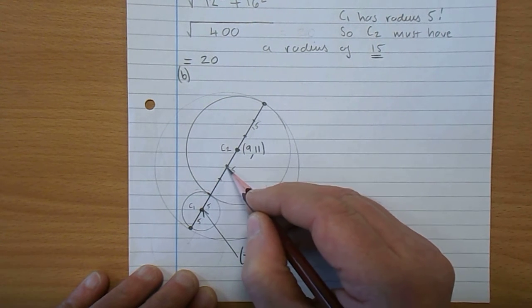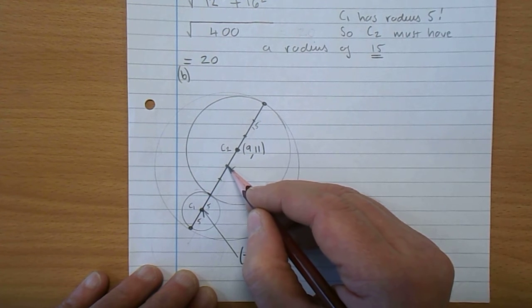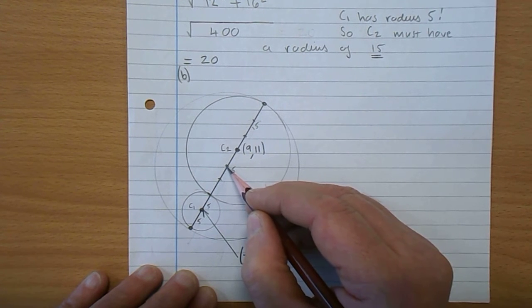Jumps of 5. So the centre of C3 is 1, 2, 3, 4. It's the fourth bit in. So that's it there. We want to know what that coordinate is there.